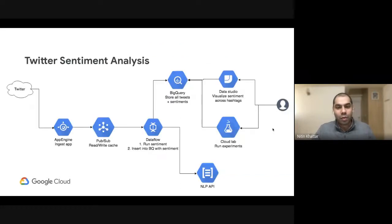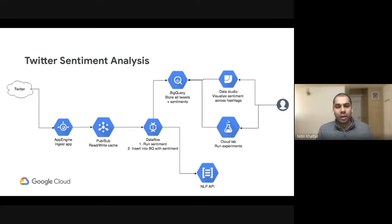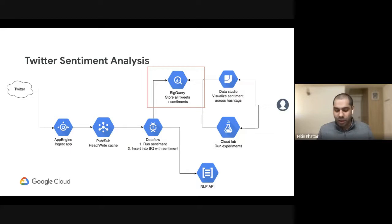Before moving on to the solution, let's look at the problem statement from the last session. We were talking about Twitter sentiment analysis — a very common use case. The workflow describes how, in a streaming, real-time fashion, you look at Twitter feeds, identify the sentiment, put that into BigQuery for analytics, build a dashboard, or do predictive and exploratory analysis. Last time we looked at Dataflow as the core: publishing events from Pub/Sub, processing through Dataflow templates, and inserting into BigQuery. Today we'll look at how BigQuery stands separately, its unique differentiators, and how it meets those requirements.